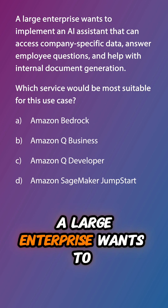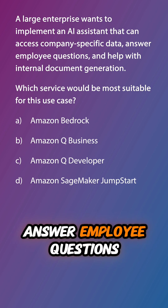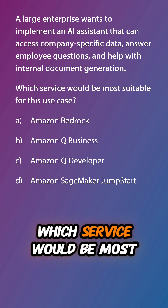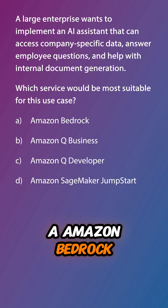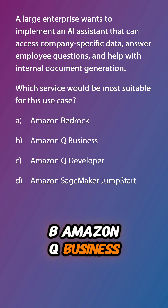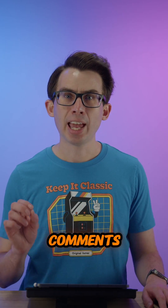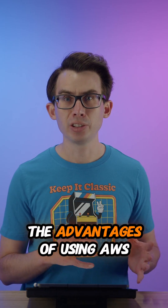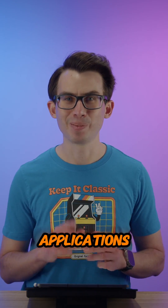Let's do a quick review question. A large enterprise wants to implement an AI system that can access company-specific data, answer employee questions, and help with internal document generation. Which service would be most suitable for this use case? A. Amazon Bedrock. B. Amazon Q Business. C. Amazon Q Developer. Or D. Amazon SageMaker JumpStart. Post your answer in the comments and we'll review this question in our next episode, where we're going to look at the advantages of using AWS generative AI services to build applications. See you then.